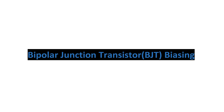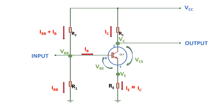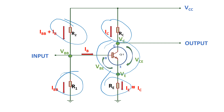Bipolar junction transistor biasing in 10 simple easy steps. This is the diagram for biasing a transistor — you can see how the resistors are connected to the transistor. There are four resistors connected to the transistor, and we need to determine their values. There are three terminals on this transistor: one is the collector, another is the base, and another is the emitter.